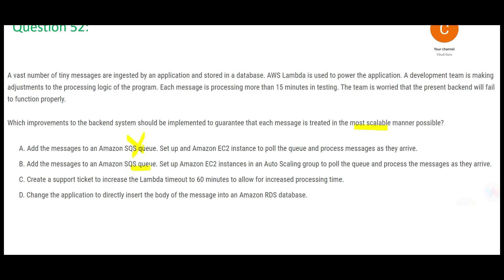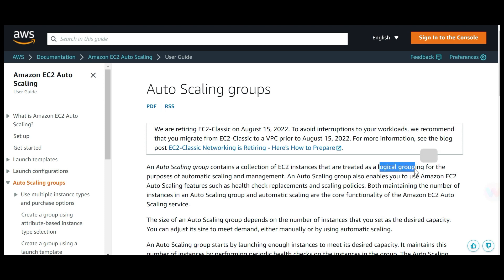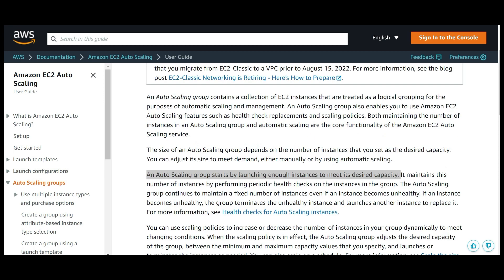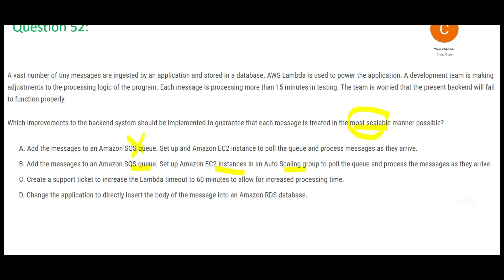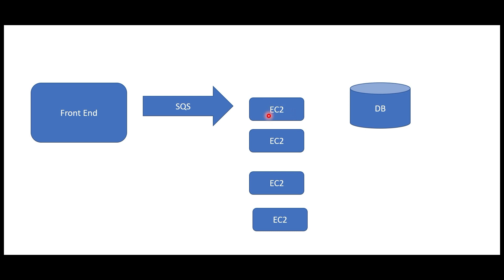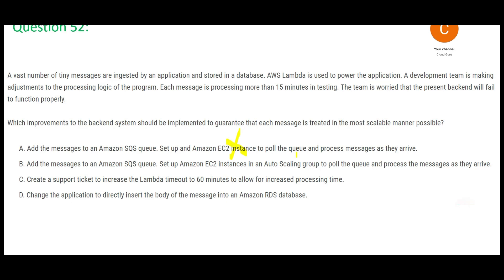Option B also tells you to use SQS, which is perfect. But then it says you use EC2 instances in an Auto Scaling Group — that is the difference between A and B. If you use an Auto Scaling Group, you are making it scalable. Auto Scaling Groups are logical groups of EC2 instances designed to create automatic scaling. It launches enough instances to meet the desired capacity. For option A, we had one EC2 instance. For option B, there is a whole group of EC2 instances. It will scale up and scale down depending upon the message load. So B has addressed scalability. This is my answer.